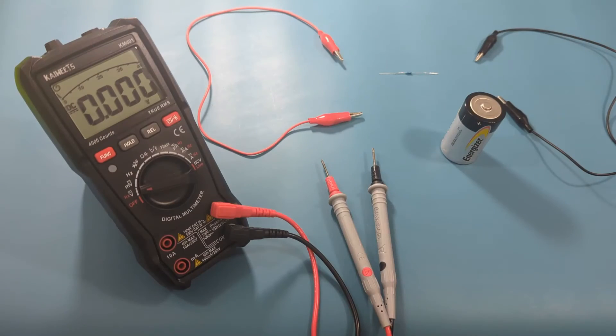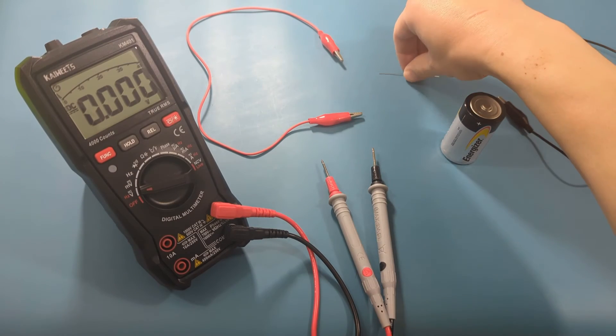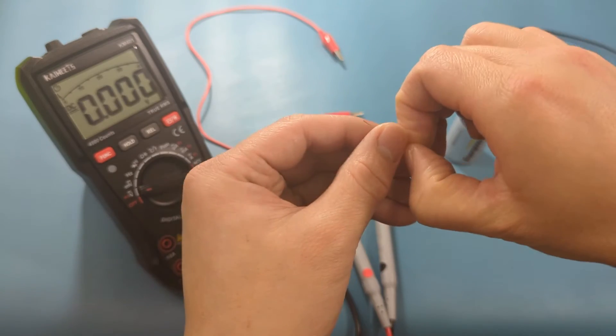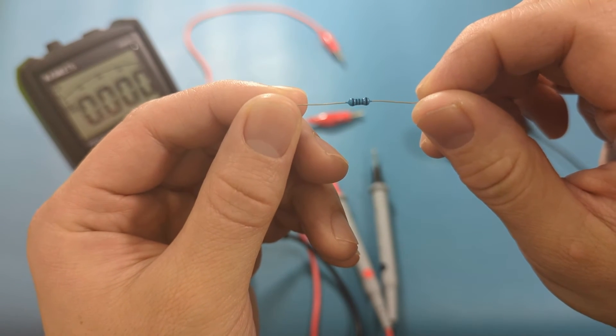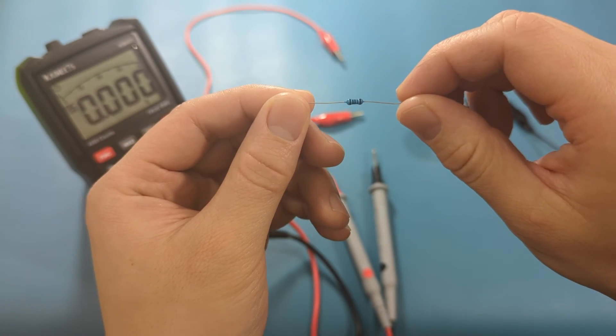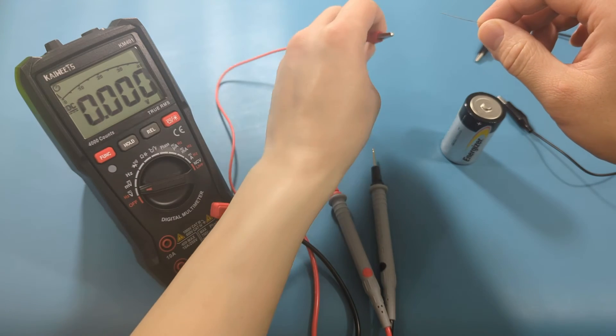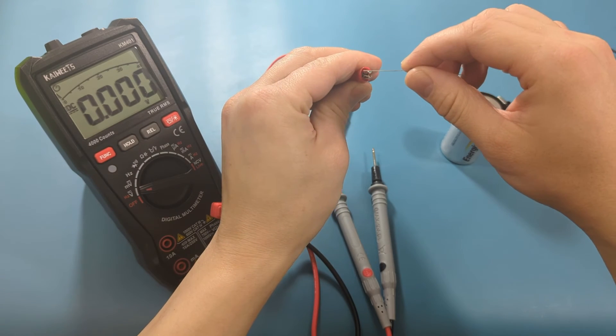To thoroughly test the battery, it needs to be evaluated while under a load condition. This process includes attaching a resistor to the battery to enable the current flow. In this case, the resistor employed possesses a resistance of 100 ohms.